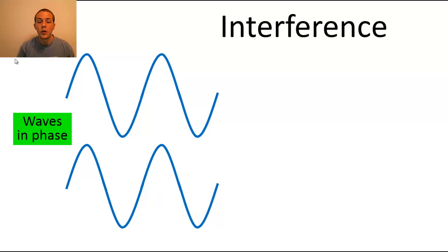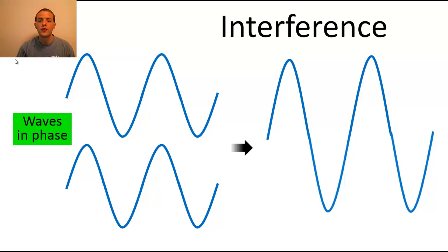They are perfectly lined up with one another, and when two waves that are in phase come together, they're going to build each other up to result in a wave that has a larger amplitude. This type of interference is what we call constructive interference.